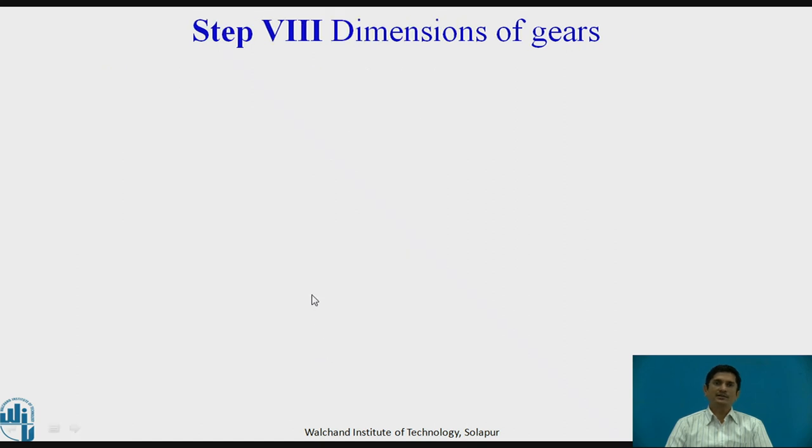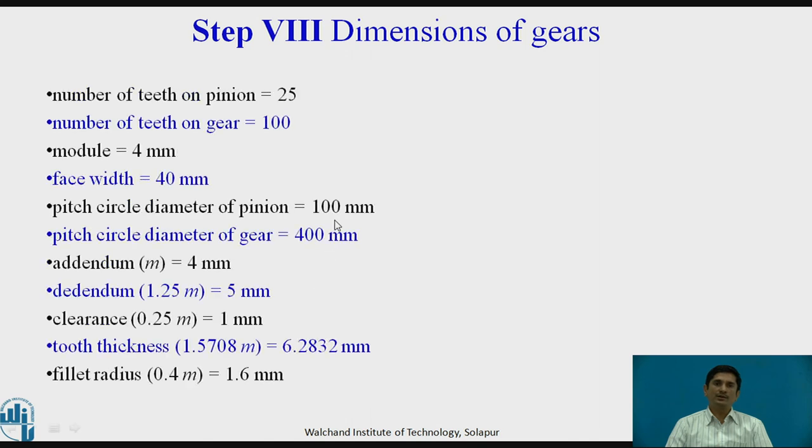The last term is dimension of gears. If we know the module, all other terms can be calculated. We have calculated number of teeth on pinion, number of teeth on gear, module, face width, PCDs. Addendum equals module, that equals 4 mm. Dedendum equals 1.25 times module, 5 mm. Clearance, tooth thickness and fillet radius can be obtained by such proportions.